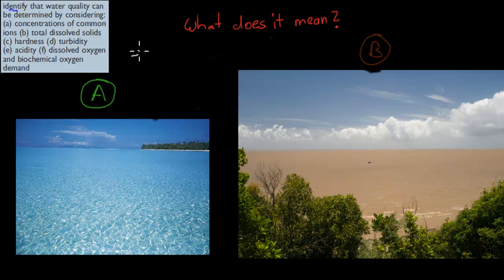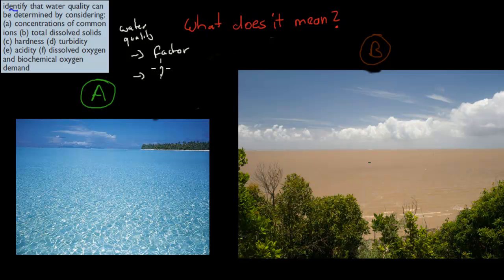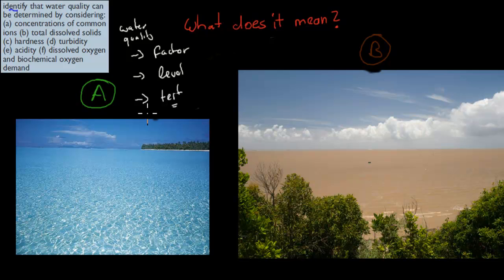We are going to talk about the factors that affect water quality, and also the levels of these factors that we want to have — the healthy levels, for example sodium or oxygen that we need to have in rivers and lakes — and also about some tests that we can do to actually test these different levels.